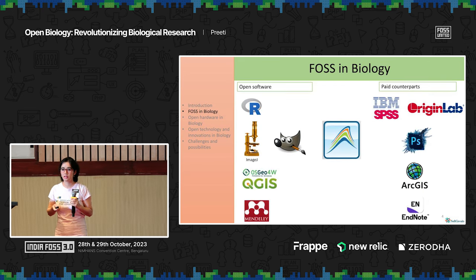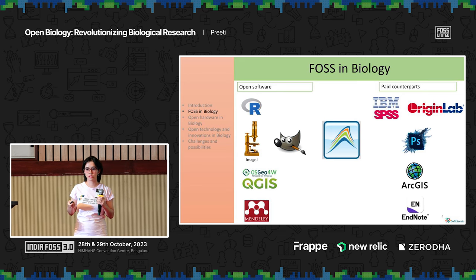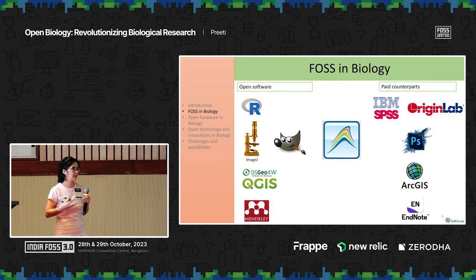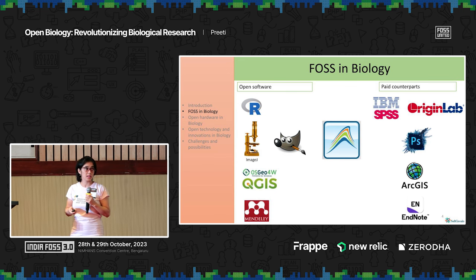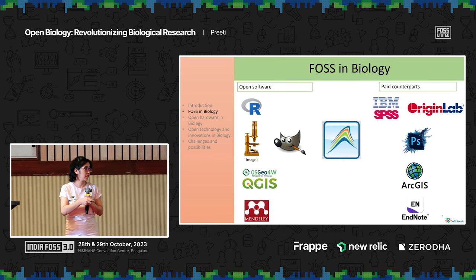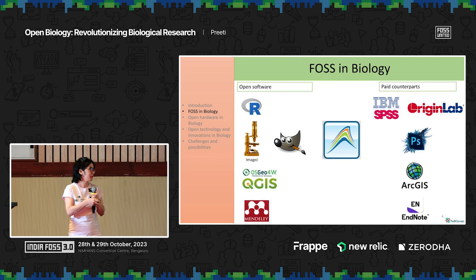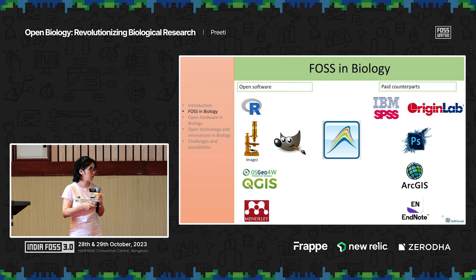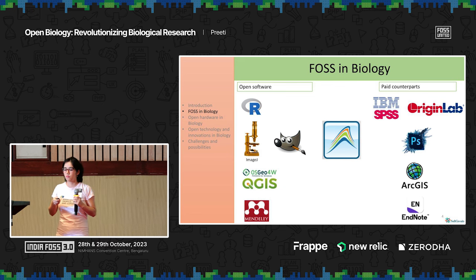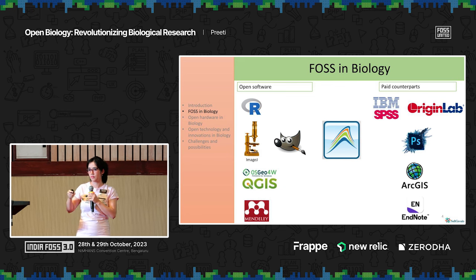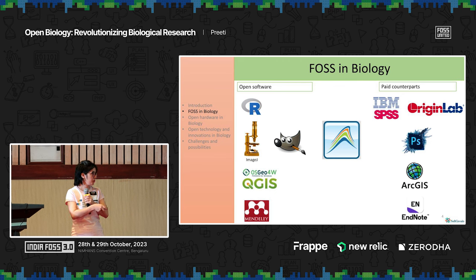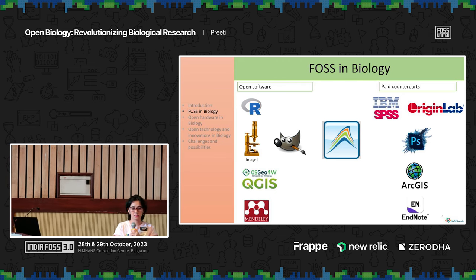Let's start with the software. The most common software I've used in statistics is R, because in ecology and evolution you analyze and overanalyze and keep on analyzing data. The paid counterpart for R is SPSS and Origin, which mostly well-funded labs use. For image analysis I've used ImageJ and GIMP, and the paid counterpart is Photoshop. For mapping the distribution of species, I've used QGIS, and the paid counterpart is ArcGIS. For referencing, I've used Mendeley, and the paid counterpart is EndNote.